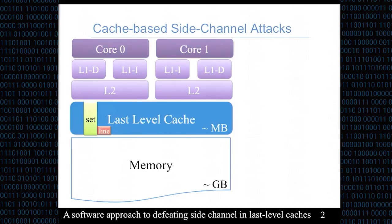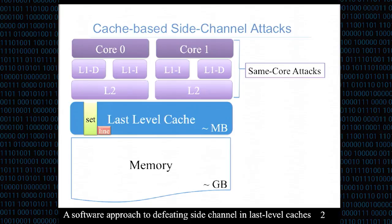Before I introduce the defense, we should have some background about cache-based side channel attacks. Cache-based side channel attacks are based on the knowledge that attackers can monitor the cache accesses caused by the victim due to cache contentions. Cache-based side channels can be classified into two types: same-core attacks, which utilize private caches like L1 or L2, and cross-core attacks, which utilize the shared last-level cache.